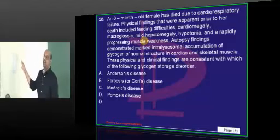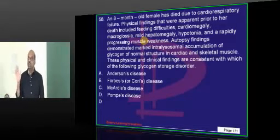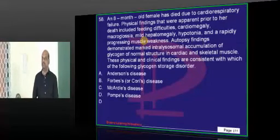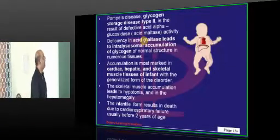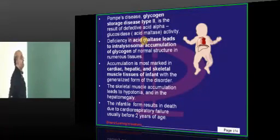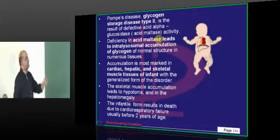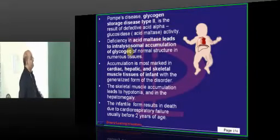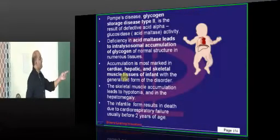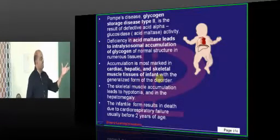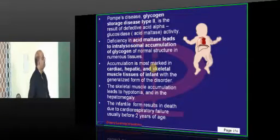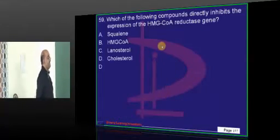Different glycogen disorders — you must be very sure which involve the liver, which involve muscle, and which involve both liver and muscle. Pompe's disease is glycogen storage disease type 2, caused by alpha-glucosidase deficiency, leading to intralysosomal accumulation of glycogen. This affects cardiac, hepatic, and skeletal muscles — all of them suffer in Pompe's disease.